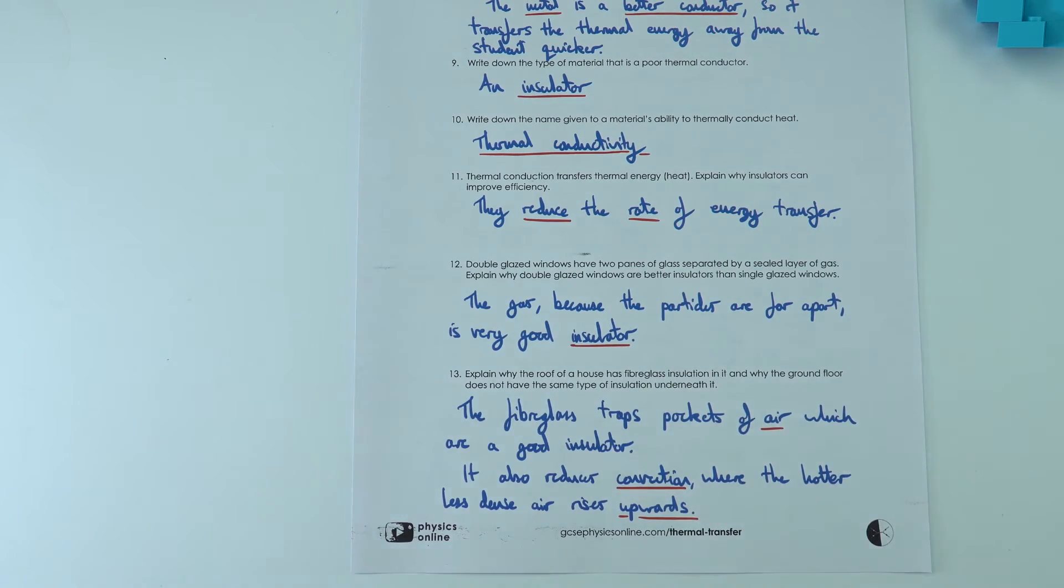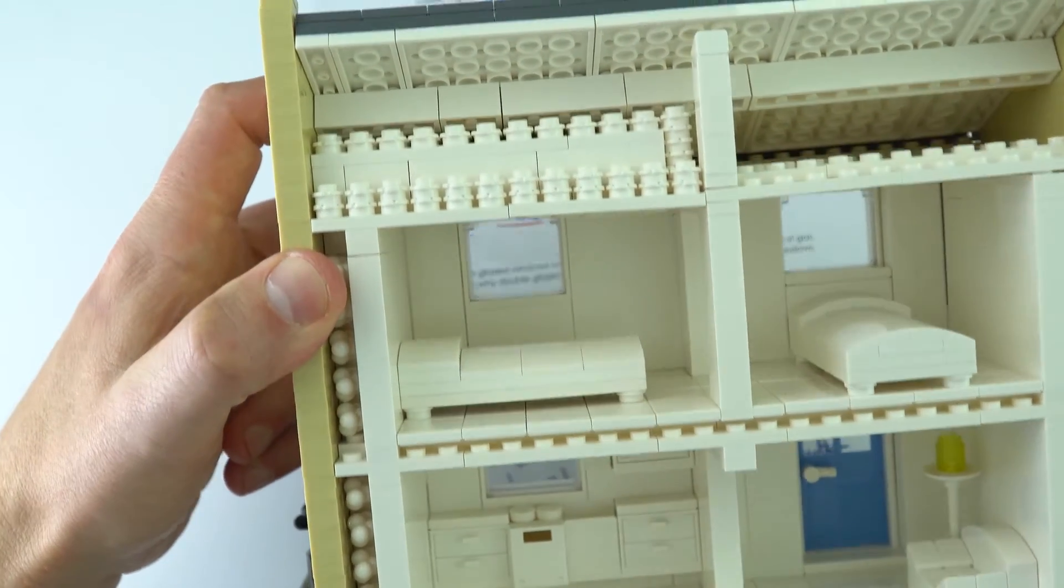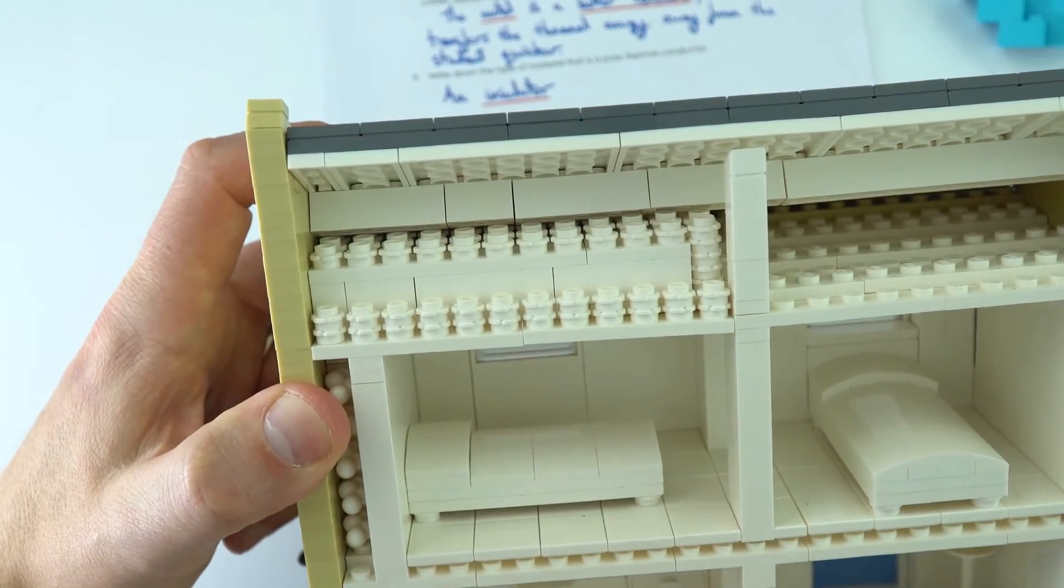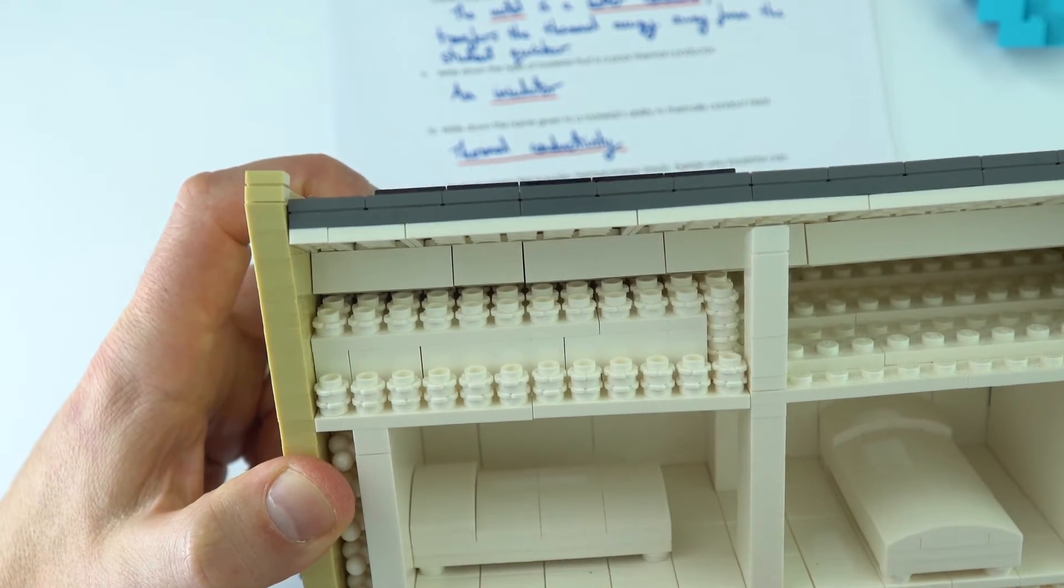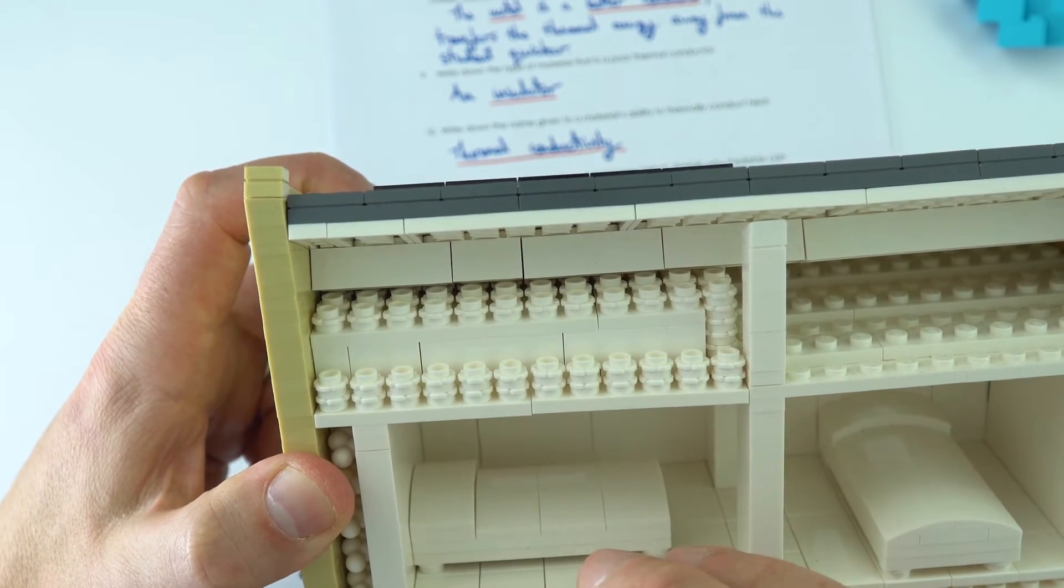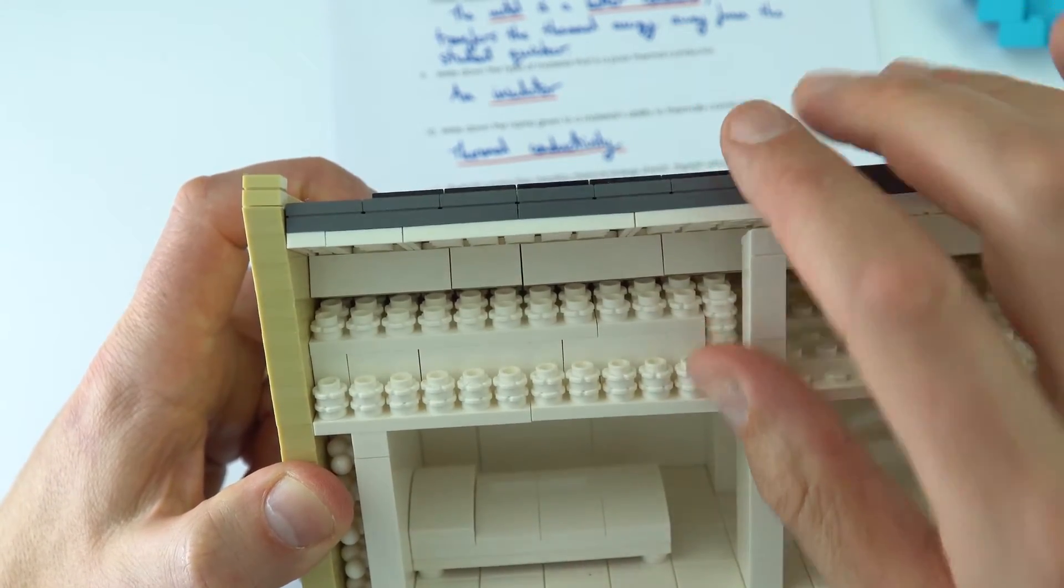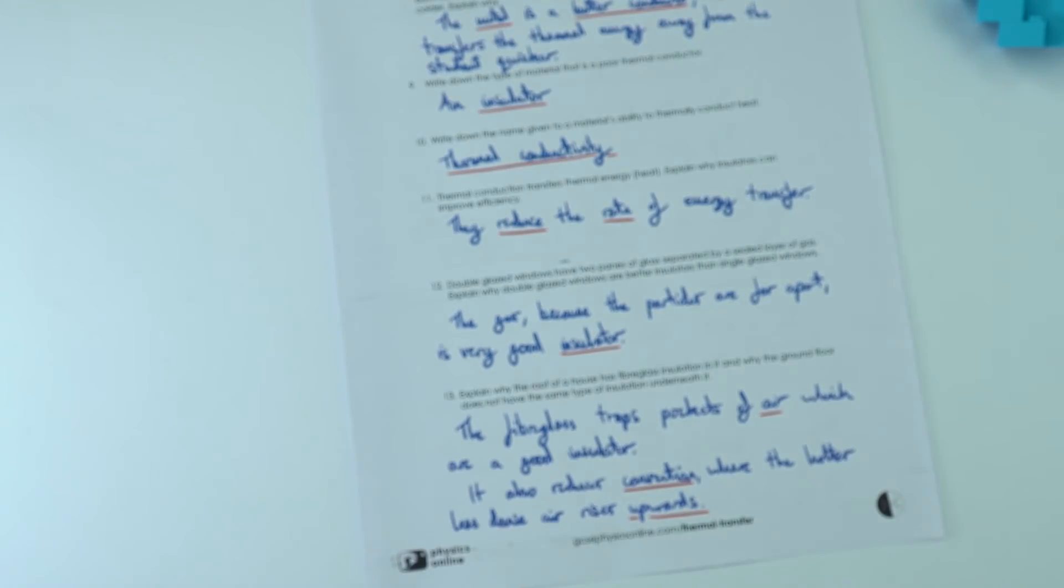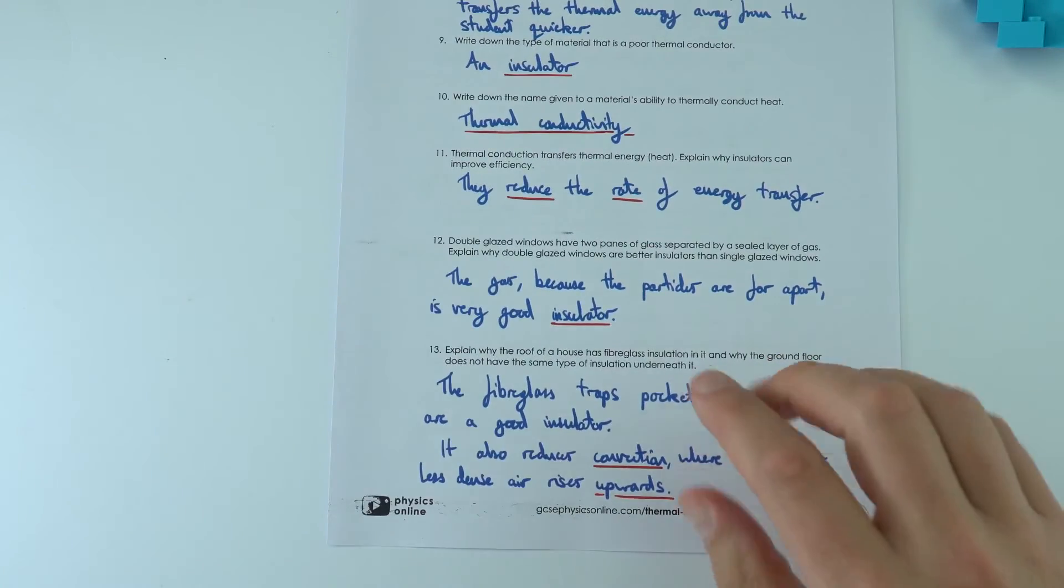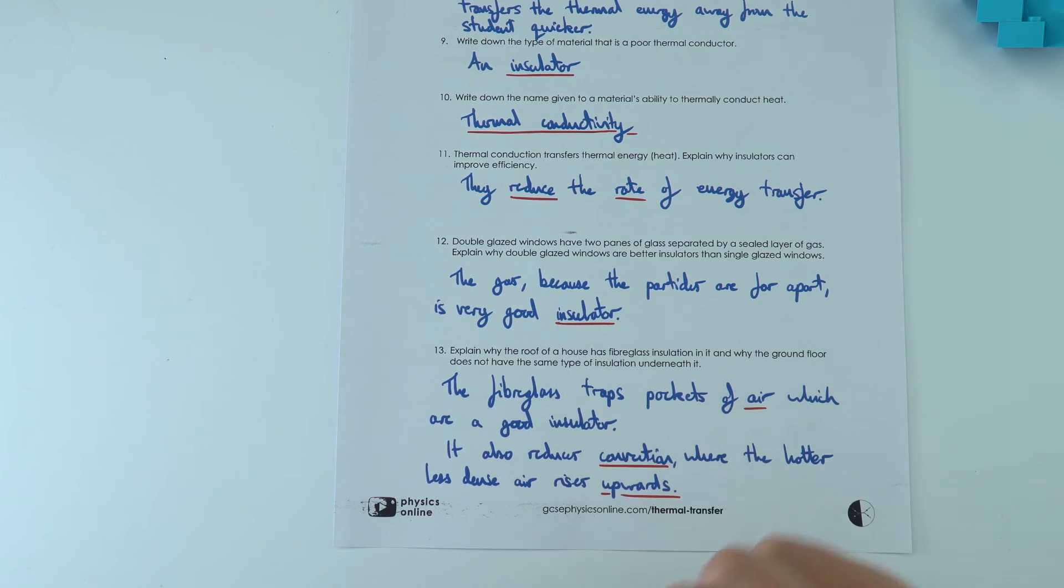And the other thing is that you tend to have this kind of fiberglass at the top of a building rather than at the bottom, because what we find is that when you've got convection currents, we often find that the less dense air, which is hotter, moves upwards and it escapes through the roof of the building rather than escaping out through the bottom. So what that means is that if you're going to insulate something, it's better to insulate something which is high up, like the loft or the attic, rather than underneath the floors.